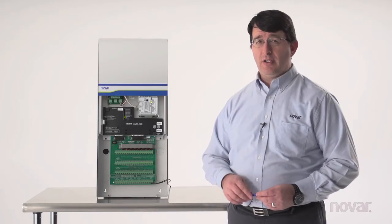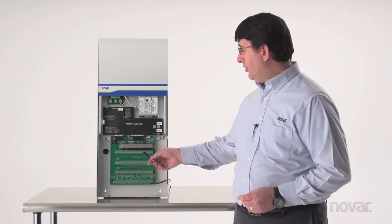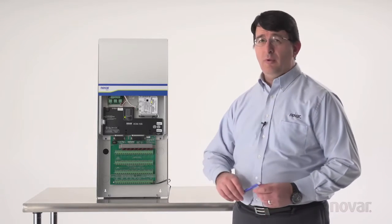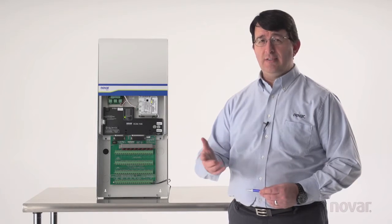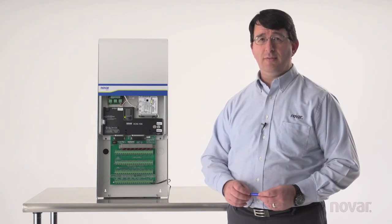One leg from this transformer should be jumpered across to each one of the outputs. That way, when the output is energized, it sends that voltage out to the device which is being controlled in the field.